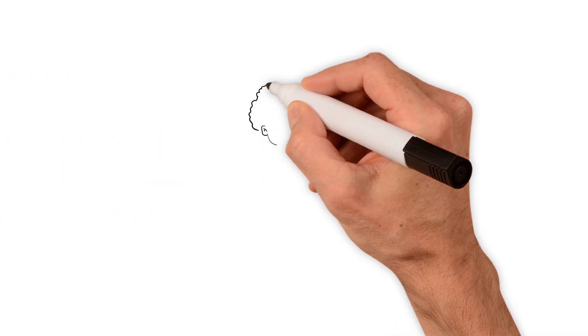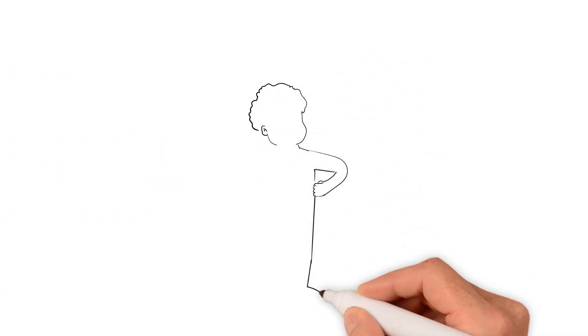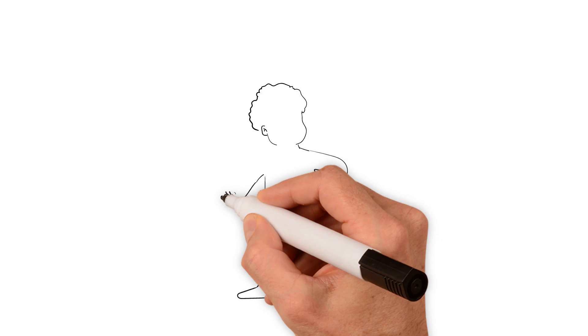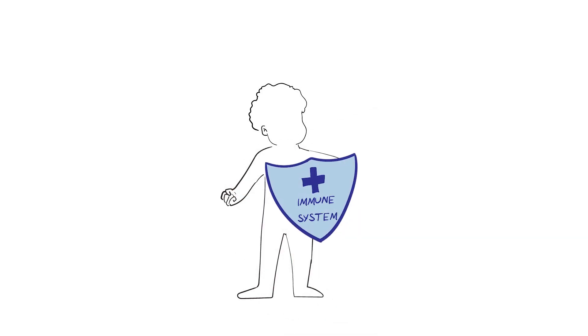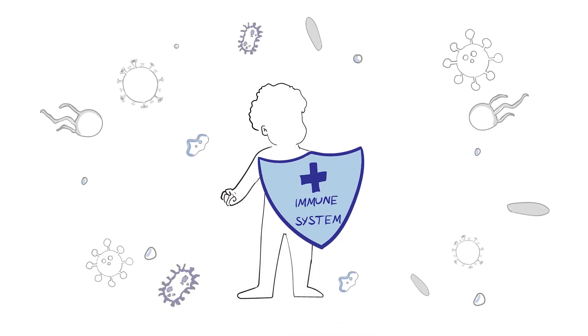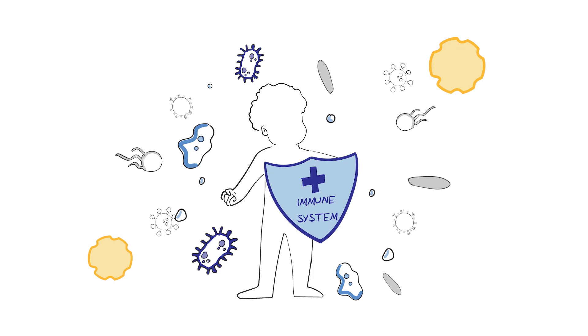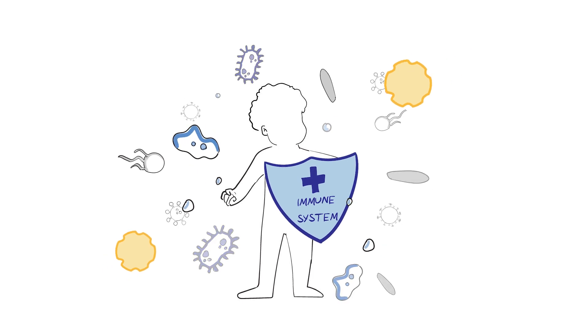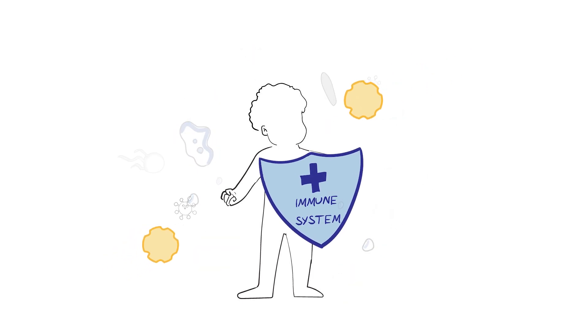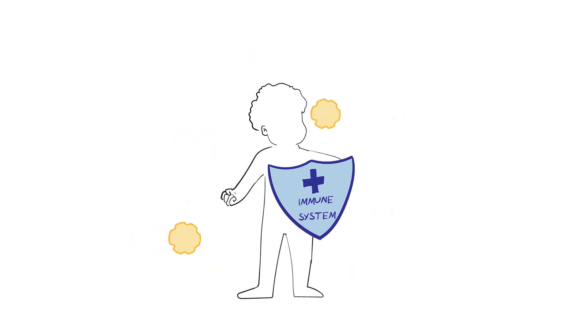How do allergies occur? The immune system is how our body detects, remembers, and eliminates foreign material that is harmful to the body, such as viruses and bacteria, and allergens are treated in the same way.